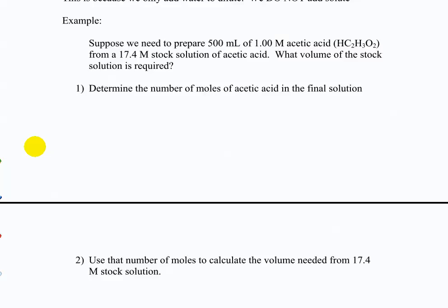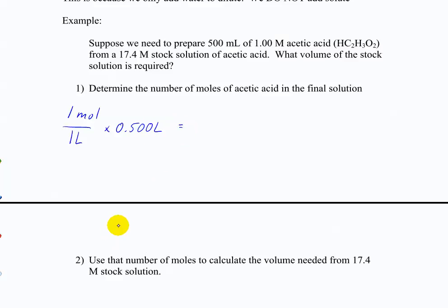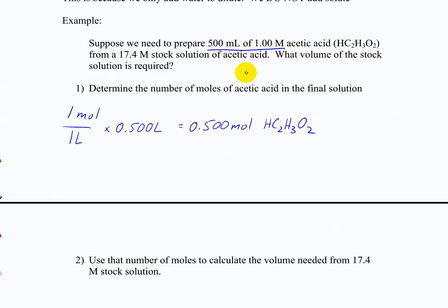We need 500 milliliters of a 1 molar solution. A 1 molar solution is 1 mole per liter, and 500 milliliters is 0.500 liters. So that gives us 0.500 moles of acetic acid needed in the final solution. That's what the first piece of information told us: 500 mL of 1 M solution equals 0.500 moles.